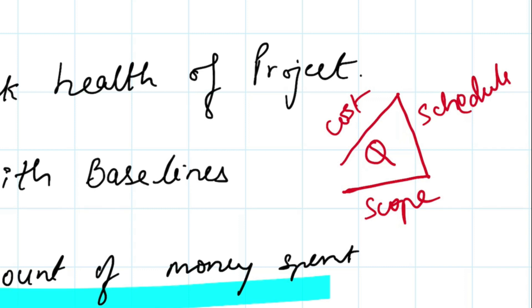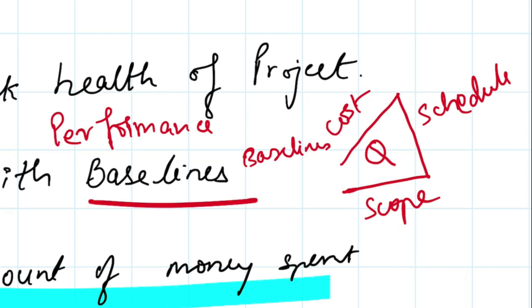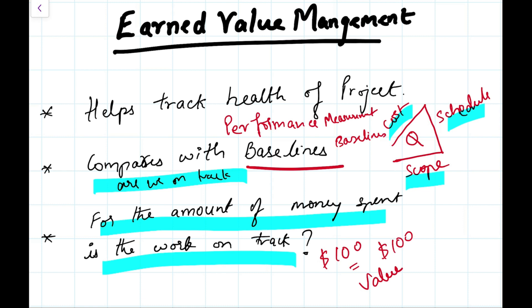When tracking cost, schedule, and scope, we also take care of quality — that's called the triple constraint triangle. What you're tracking against are the baselines. The performance measurement baseline combines the baseline of cost, schedule, and scope. By comparing actuals to these baselines, we ensure that we are on track for project execution.